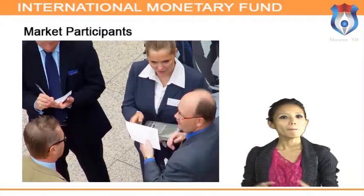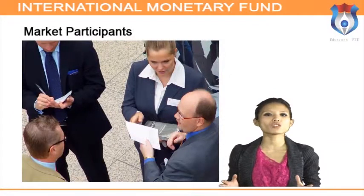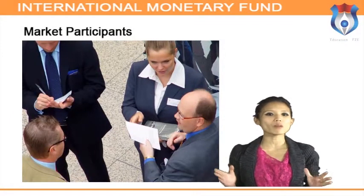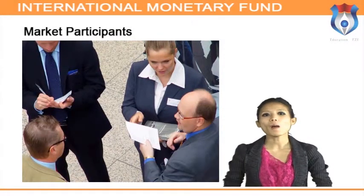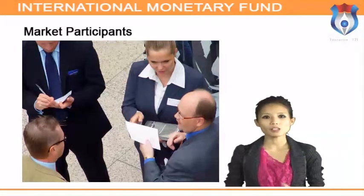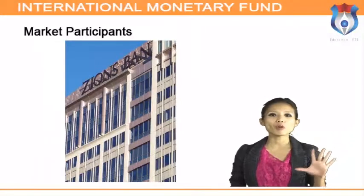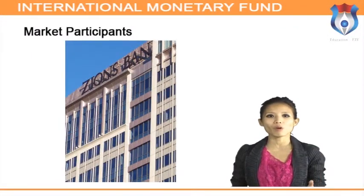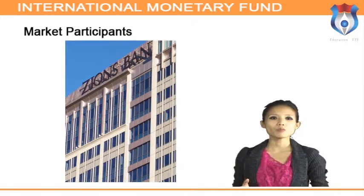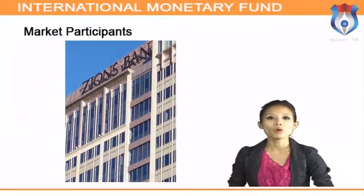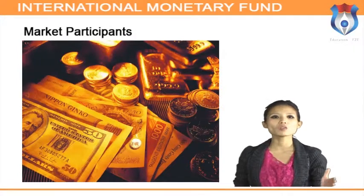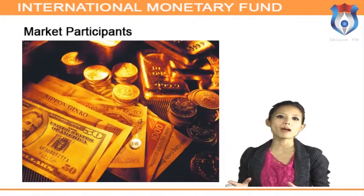Market participants are foreign exchange traders who directly or indirectly buy and sell currencies. These participants enter the market as arbitrageurs, traders, hedgers, and speculators. There are five broad categories of participants in the foreign exchange market: customers, commercial banks, other financial institutions, brokers, and central banks. The foreign exchange market is dominated by interbank operations — the buying and selling of currencies among banks.